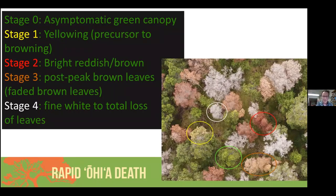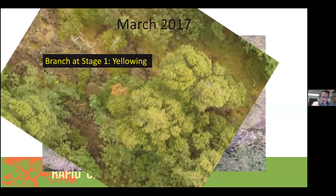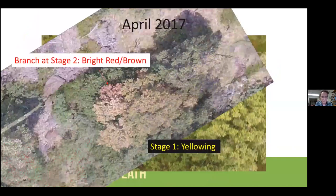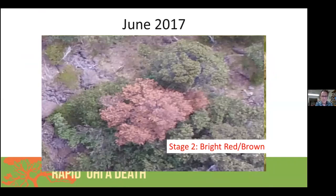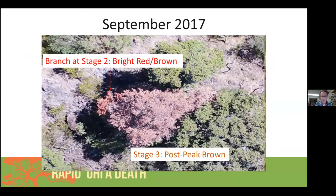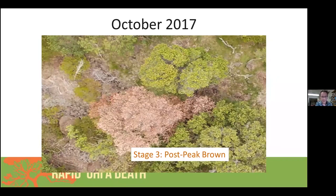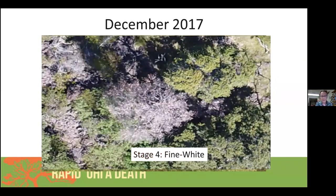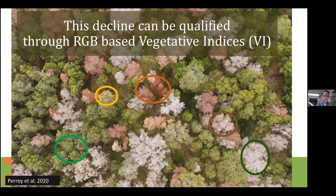As we look at trees over time, trees which are infected go through a sequence of stages visible in the imagery we collect. They start to get chlorotic or yellow first — a brief stage lasting maybe a week or two — and then turn a bright reddish brown. After that, the color fades to a faded brown, then the leaves become bleached, and finally the leaves fall off. Looking at this image, you can see trees at each of those different stages: the yellow, the bright red, the post-peak brown, and the fine white.